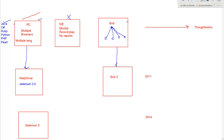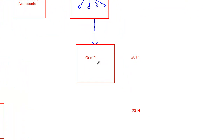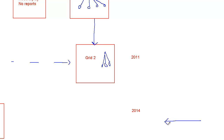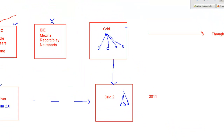Grid evolved into Grid 2, which supports WebDriver. Grid 2 also still supports RC. Grid 2 is again used to run test cases in parallel to save time and effort. Something coming up in the market is Selenium 3 - I am not sure what new things will come in it, but perhaps something better on mobile-based testing.